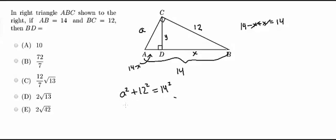So now I'm just going to go ahead and solve for A. So I'm going to get A squared plus 144 equals 196. I'm going to subtract 144 from both sides and I'm going to get A squared is equal to 52. So we know that A is equal to the square root of 52. So I'm going to go ahead and erase this A and put a square root 52 back there.